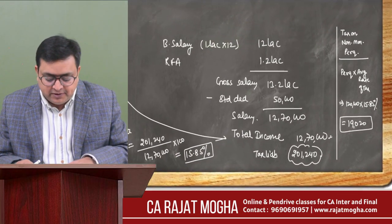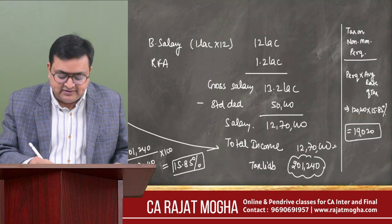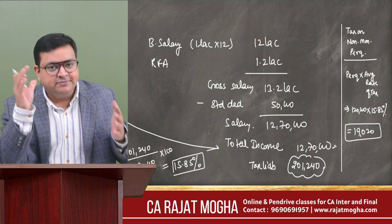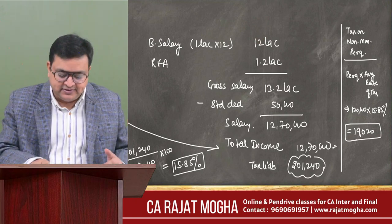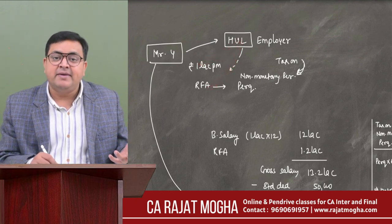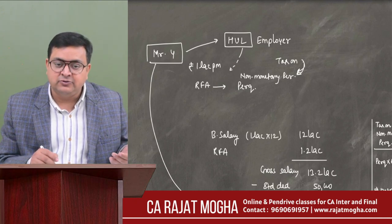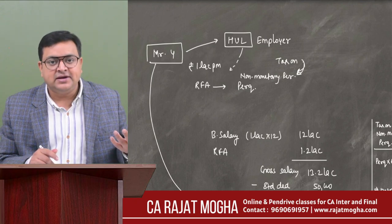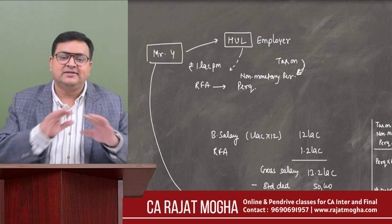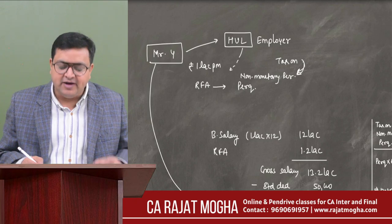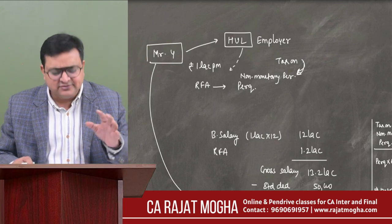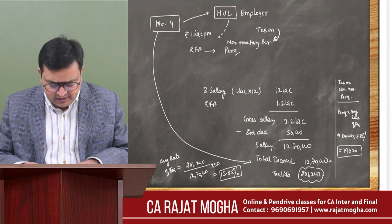You should also relate this topic with PGBP. Under Section 40(a), if tax on non-monetary perquisite is paid by the employer, this expense is specifically disallowed in the employer's hands. Why? Because it is already exempted in Mr. Y's hands. So it is not deductible for the employer. That is an easy part to remember — it is disallowed under Section 40(a) for the employer.